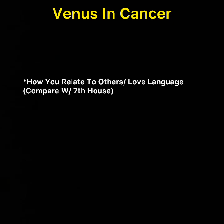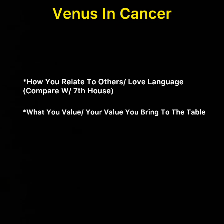I always tell you guys, when you're looking in the chart there are multiple areas that you have to compare to see different sides of ourselves depending on what we're trying to look for. So if you want to see your love language and how you relate to others, look at your Venus in Cancer, but also look at the sign and any planets that are in the seventh house, as this will also show how you relate to others and your love language. Compare these two areas.